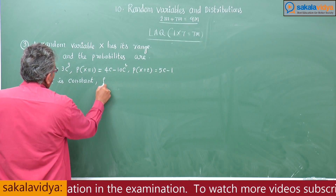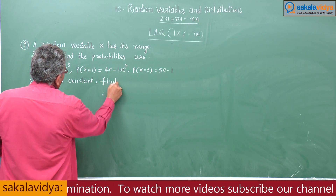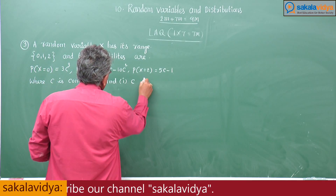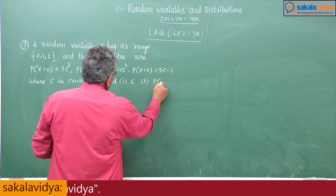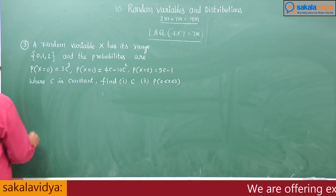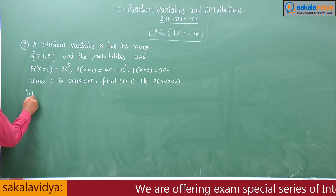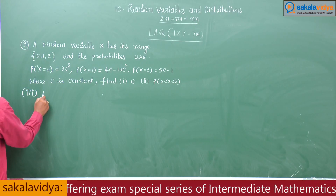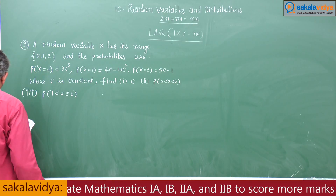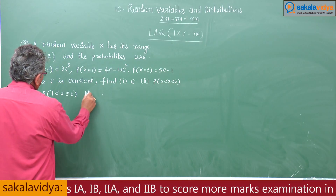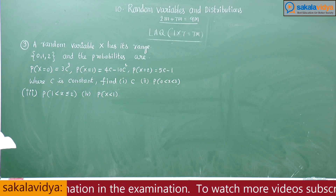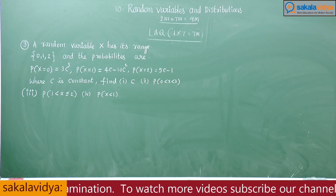Find: first, c; second, P of 0 less than X less than 3; third, P of 1 less than X less than or equal to 2; fourth, P of X less than 1.